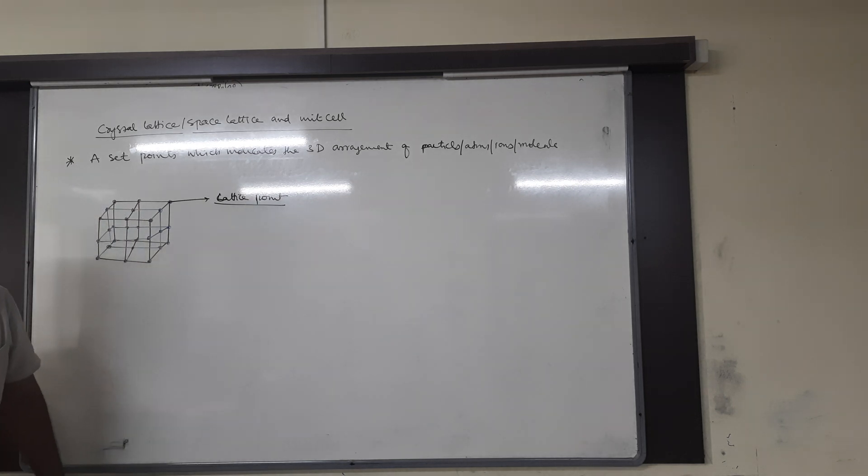In crystal lattice, each point indicates a lattice point or lattice site. When these lattice points are joined in a straight line, they form the geometry of the crystal.